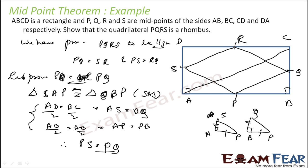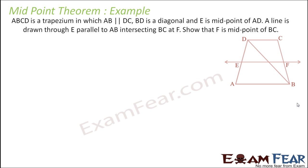PQRS is already a parallelogram. Now if these two adjacent sides PS and PQ are equal, it is a rhombus. Since PS equals QR and PQ equals SR as opposite sides of a parallelogram, all sides are equal to PQ. Thus PQRS is a rhombus.